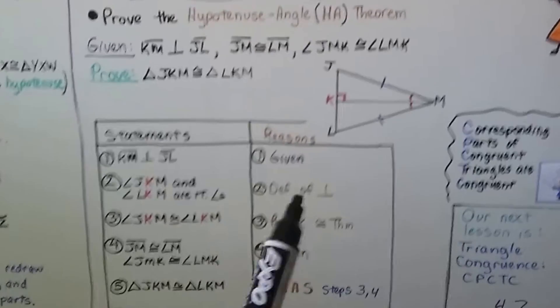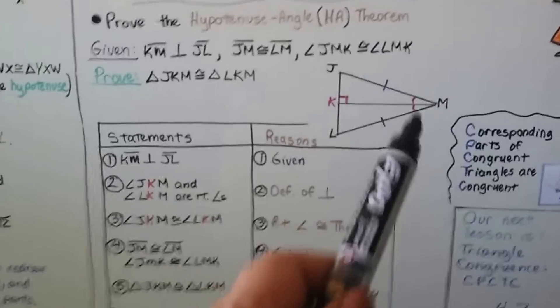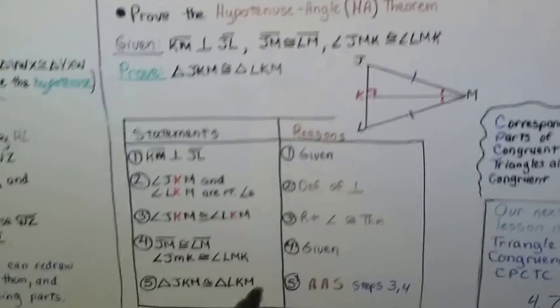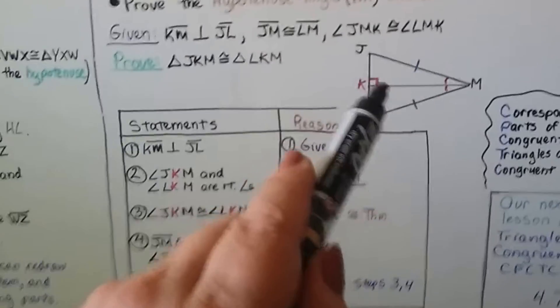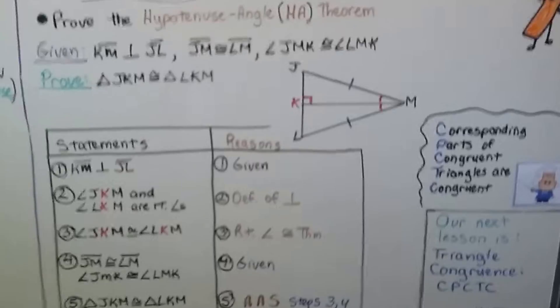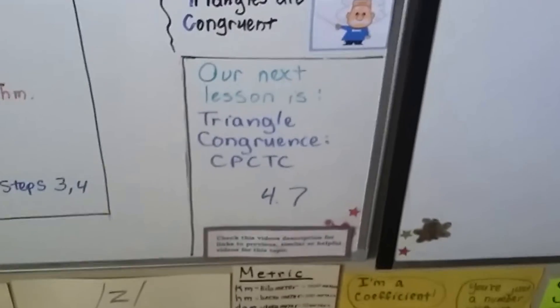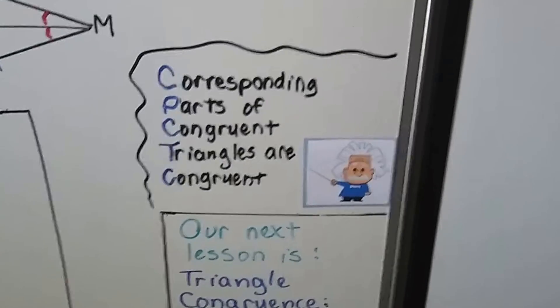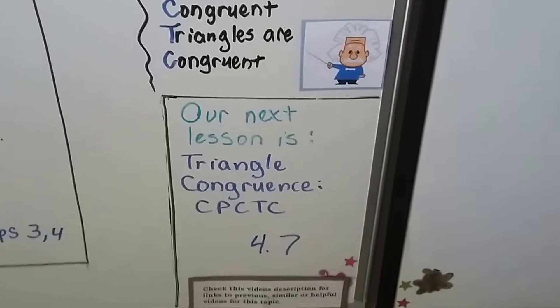For Hypotenuse Angle, we've got hypotenuses that are congruent and an angle that's congruent. We could even describe it as Angle-Angle-Side: a 90-degree angle, that angle, and that side. Our next lesson is triangle congruence CPCTC, which stands for Corresponding Parts of Congruent Triangles Are Congruent. It's going to be Lesson 4.7.